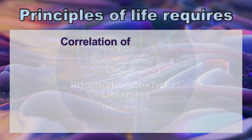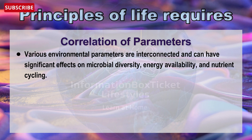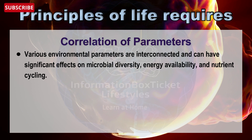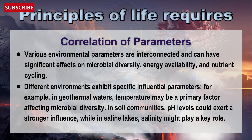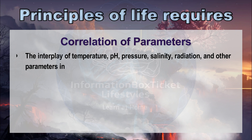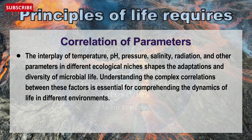Various environmental parameters are interconnected and can have significant effects on microbial diversity, energy availability, and nutrient cycling. Different environments exhibit specific influencing parameters: in geothermal waters, temperature may be a primary factor affecting microbial diversity; in soil communities, pH levels could exert a stronger influence; while in saline lakes, salinity might play a key role. Understanding the complex correlations between temperature, pH, pressure, salinity, radiation, and other parameters in different ecological niches is essential for comprehending the dynamics of life in different environments.